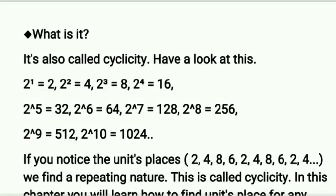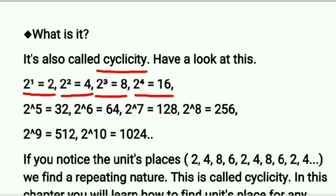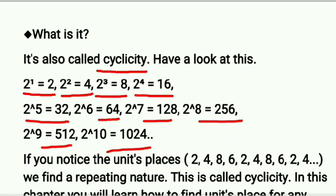First of all, understand what cyclicity is. Have a look at this. 2 raised to the power 1 is 2, 2 power 2 is 4, 2 power 3 is 8, 2 power 4 is 16, 2 power 5 is 32, then 64, 128, 256, 512, 1024.